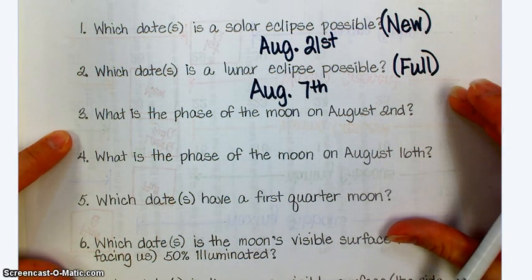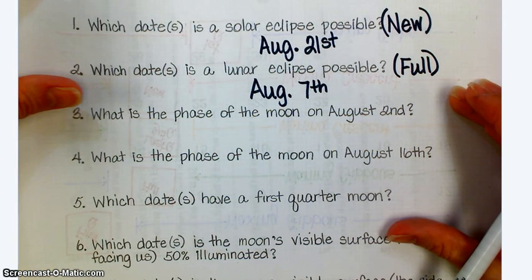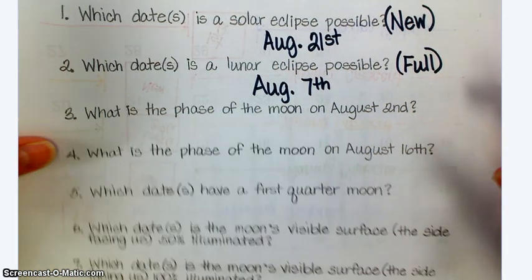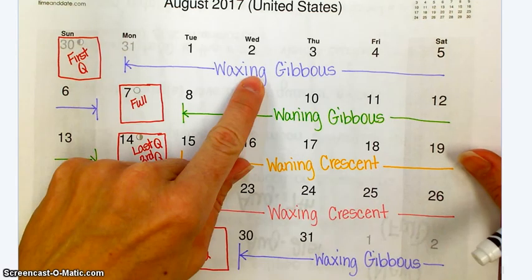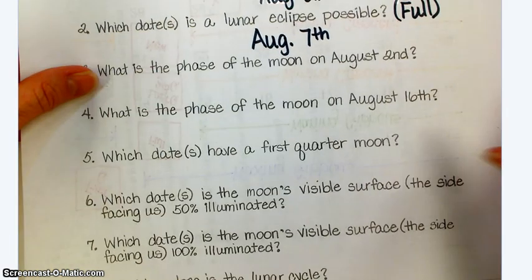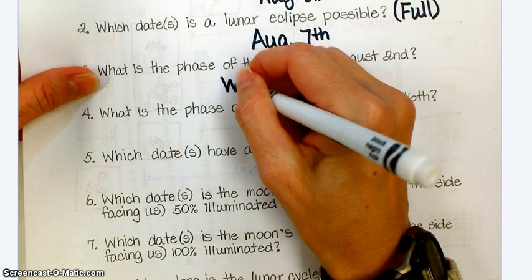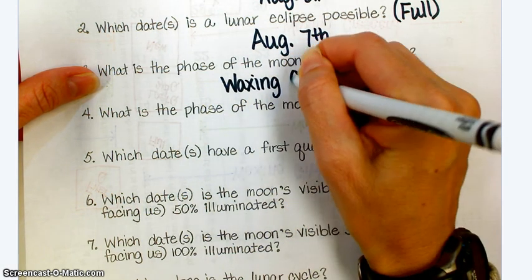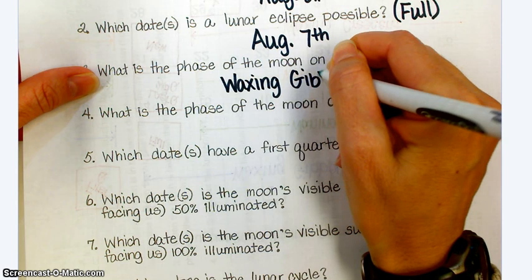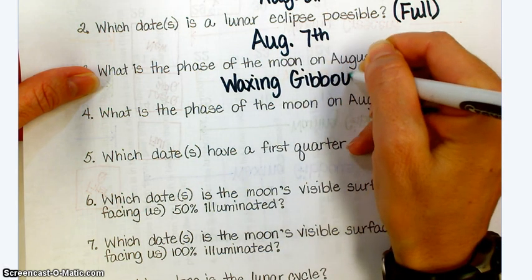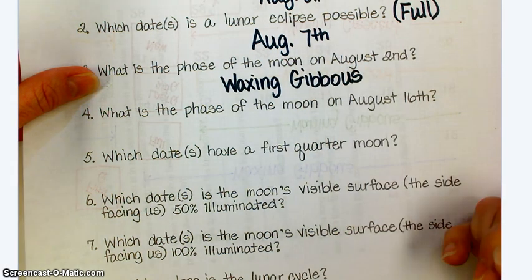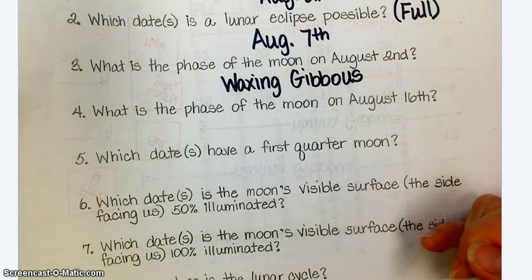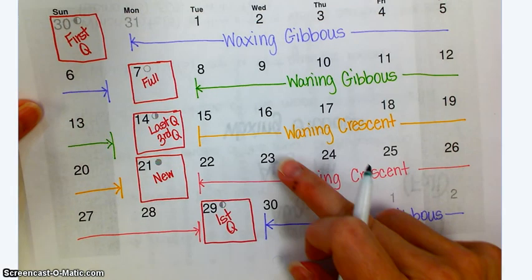And then, three and four should be easy because we just labeled the whole entire month. What phase of the moon is on August 2nd? Waxing gibbous. What is the phase of the moon on August 16th? It's a waning crescent.